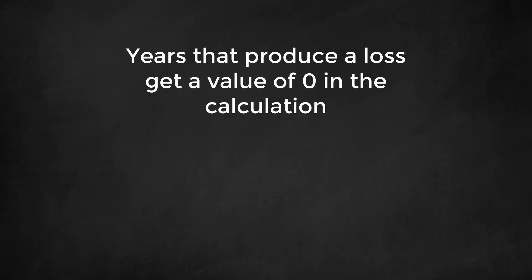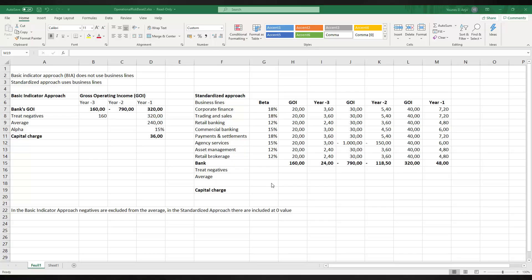Again, an Excel example is helpful here. We calculate the capital charge per business line per year. Positive and negative numbers may be offset across the year. However, when the sum of the charges is negative for a particular year, we replace the negative amount with zero.